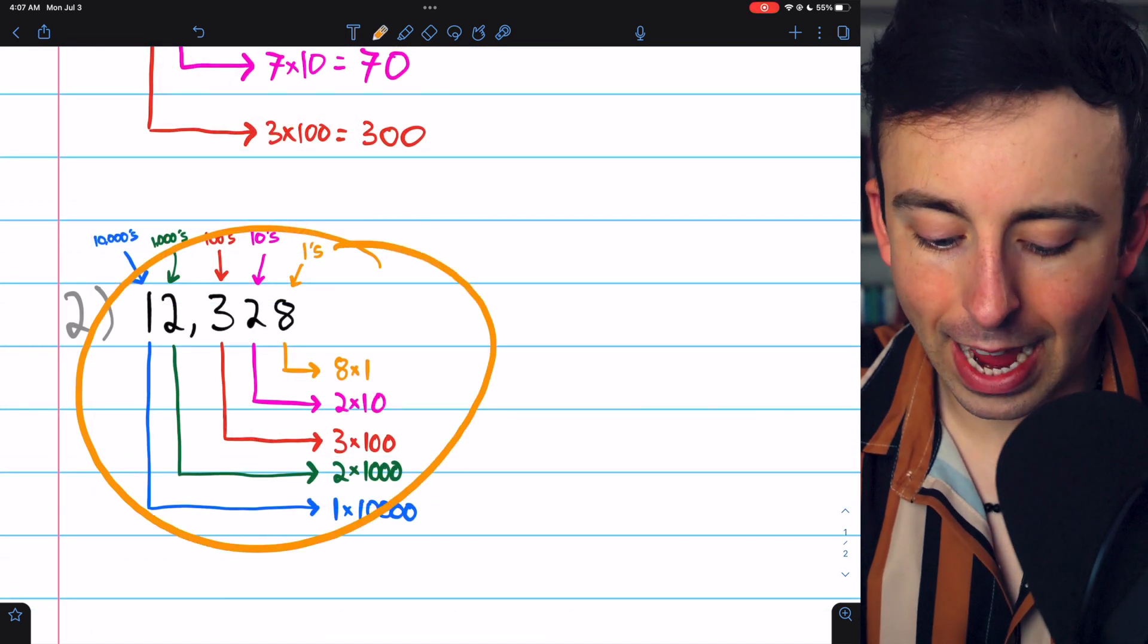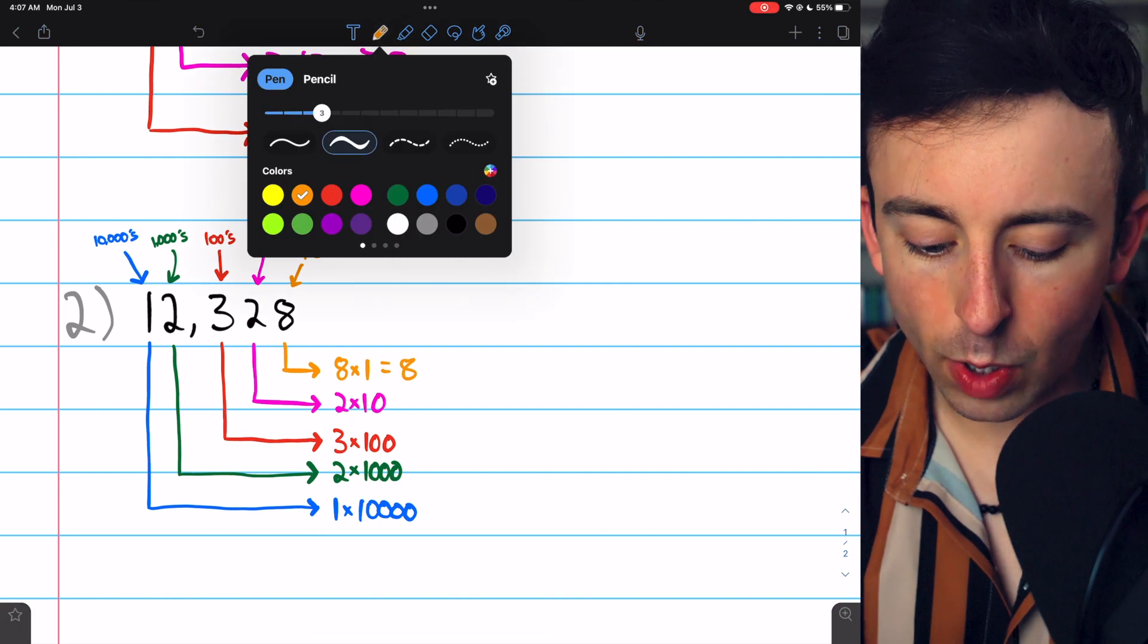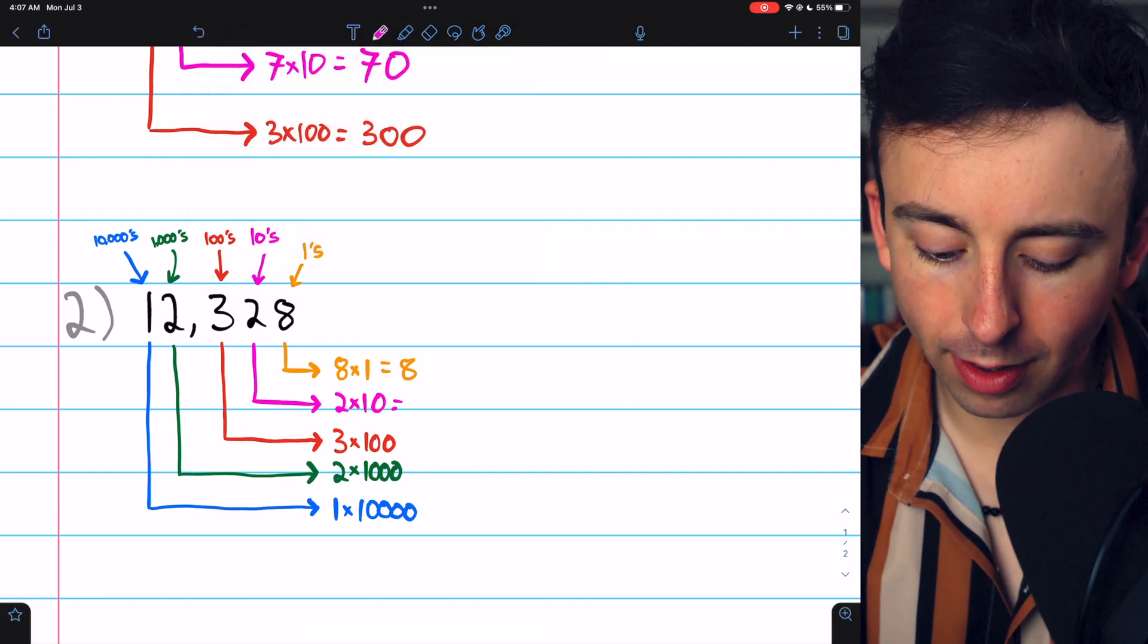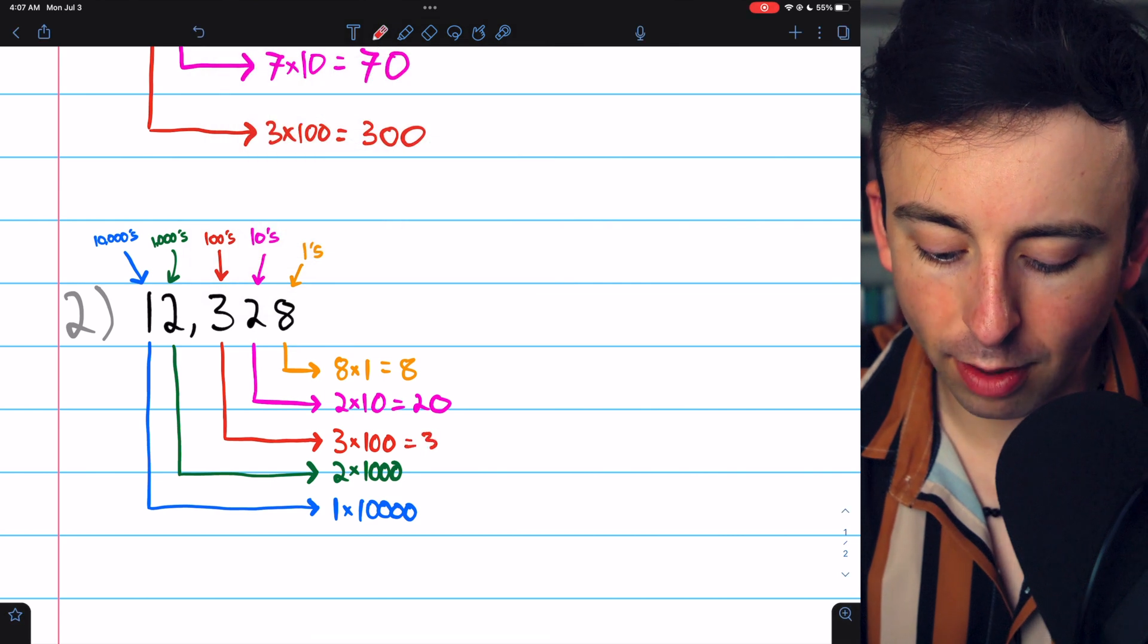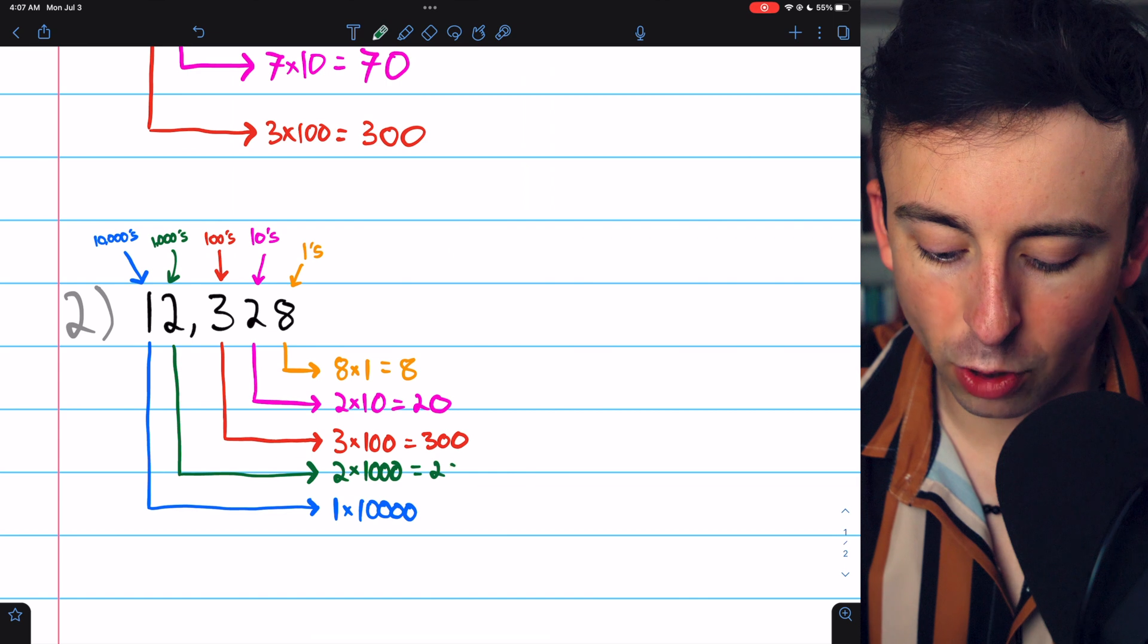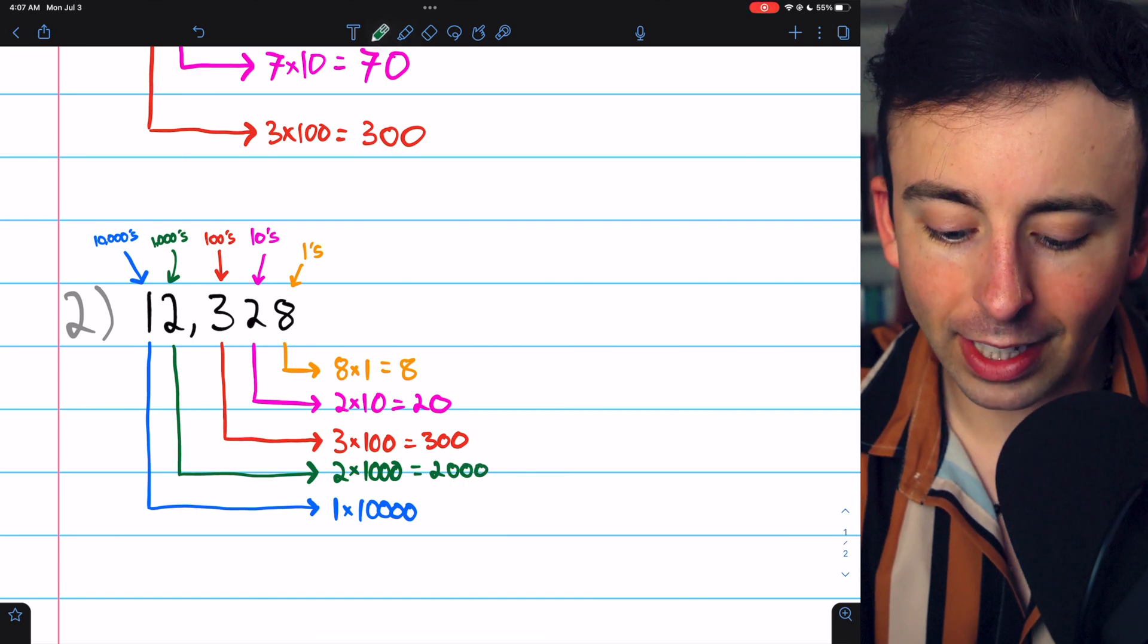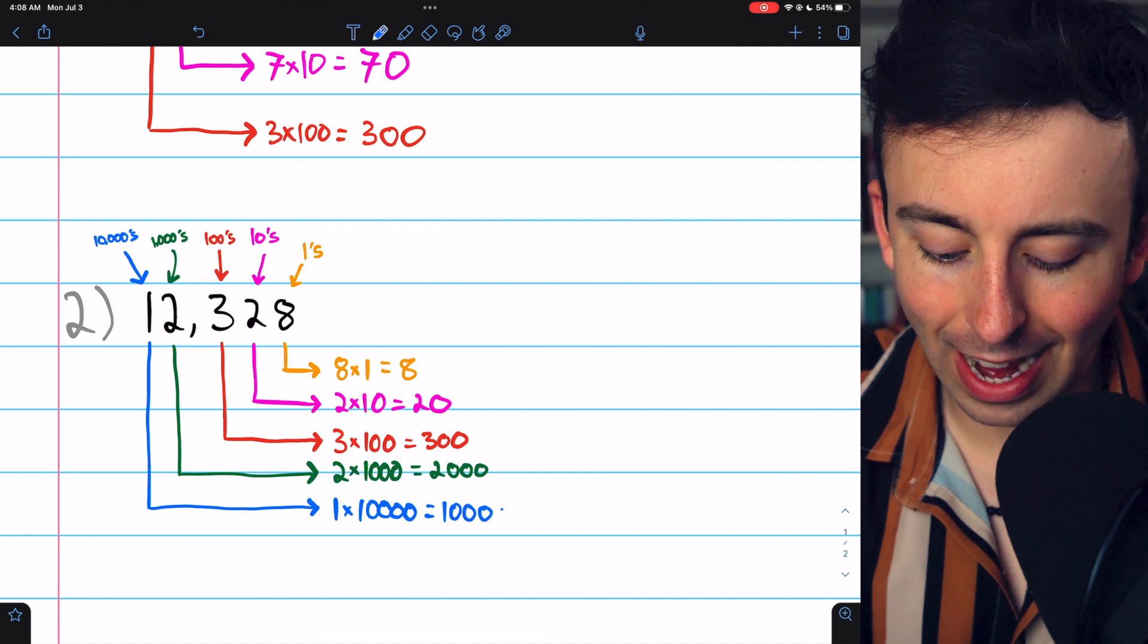And here are the labels for that. You can see we have 8 1's, which is 8, we have 2 10's, which is 20, we have 3 100's, which is 300, we have 2 1,000's, which is 2,000, and finally, we have 1 copy of 10,000, so that's just 10,000.